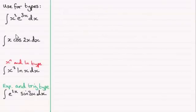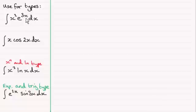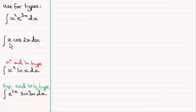It's for types like these, where we cannot expand. Take this first example: the integral of x squared times e to the power 3x. This could be x cubed times e to the power 2x. Here we've got an x to the power n function multiplied by an exponential function, something of the form e to the power ax. In this example, we've got x times cos 2x — we can't expand this. You might get similar ones like x squared times sine 3x: an x to the power n type function with some trigonometric function.